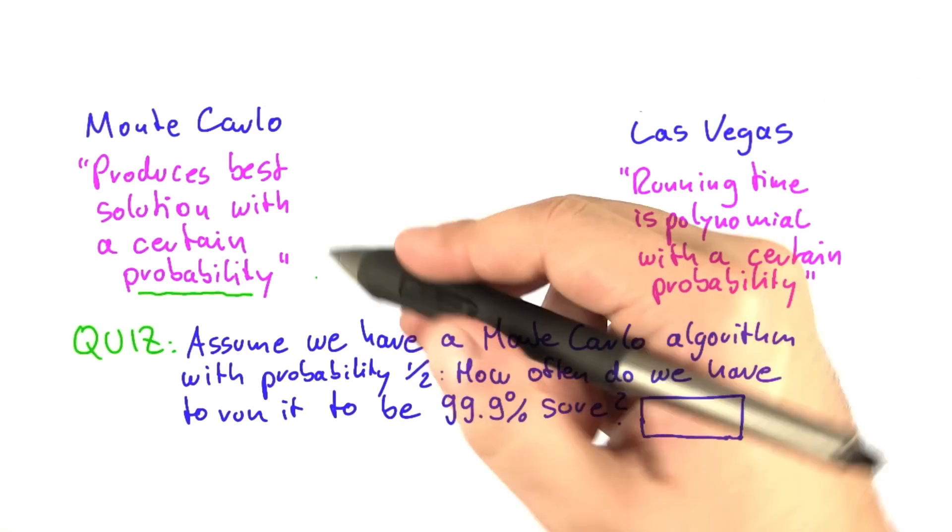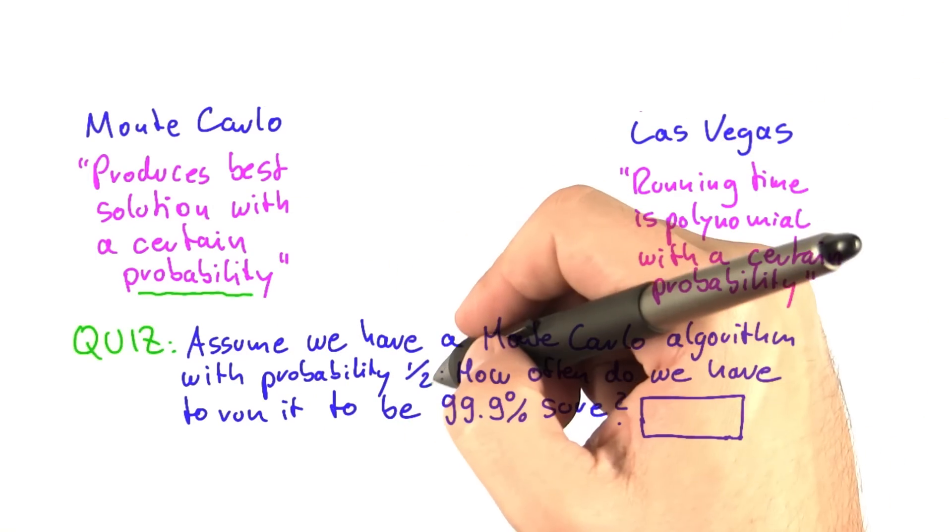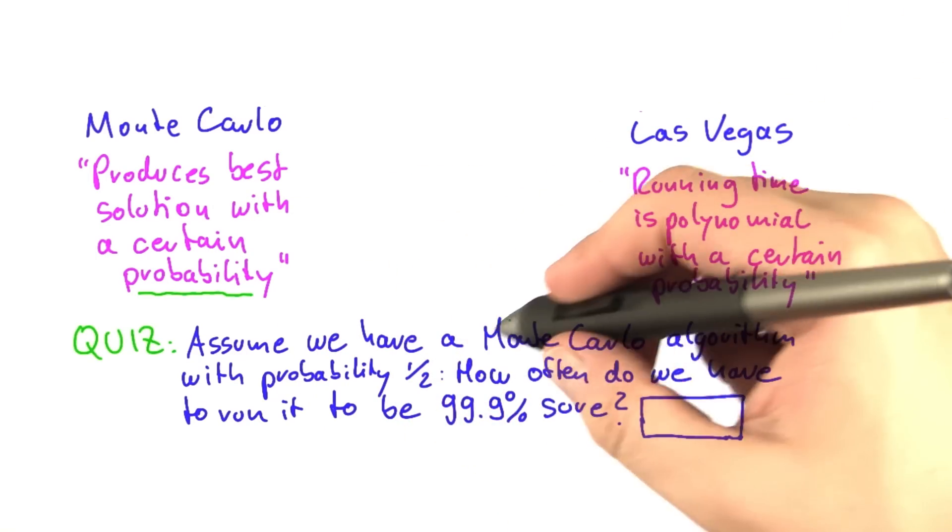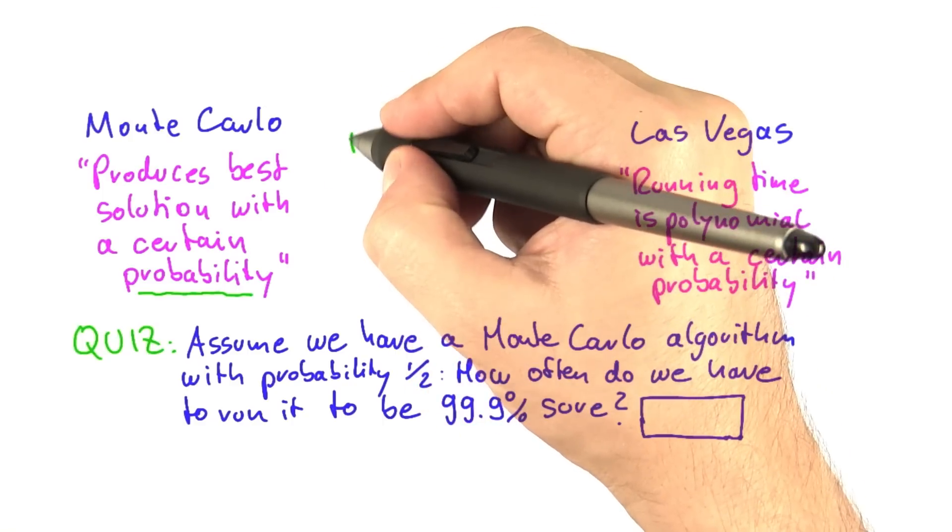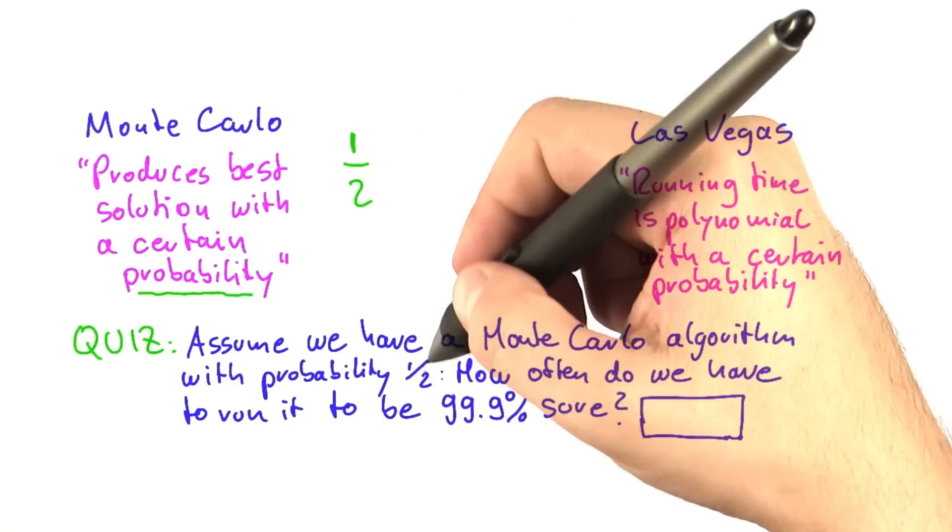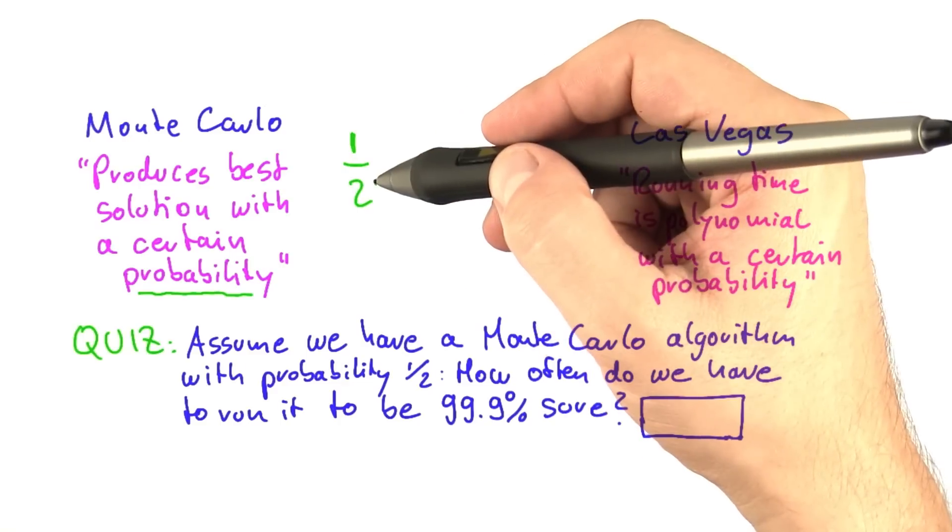If we have a Monte Carlo algorithm that produces the best possible solution with probability 1 half, and we run it a couple of times, then what happens? If we run it the first time, we can be 50% sure that we already have the best possible answer.